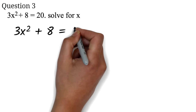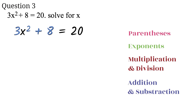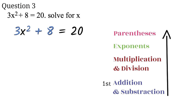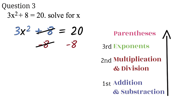We are now looking at solving multi-step equations. The process of solving is just like solving two-step equations — we want to get the x on one side of the equation. We have to get rid of the multiplication by 3, the exponent 2, and the plus 8. Using the reversal of the order of operations, we must do the plus 8 first, then the multiplication by 3, then the exponent 2. We subtract 8 from both sides. The 8 cancels out. 20 minus 8 is 12, so now we have 3x squared equals 12.